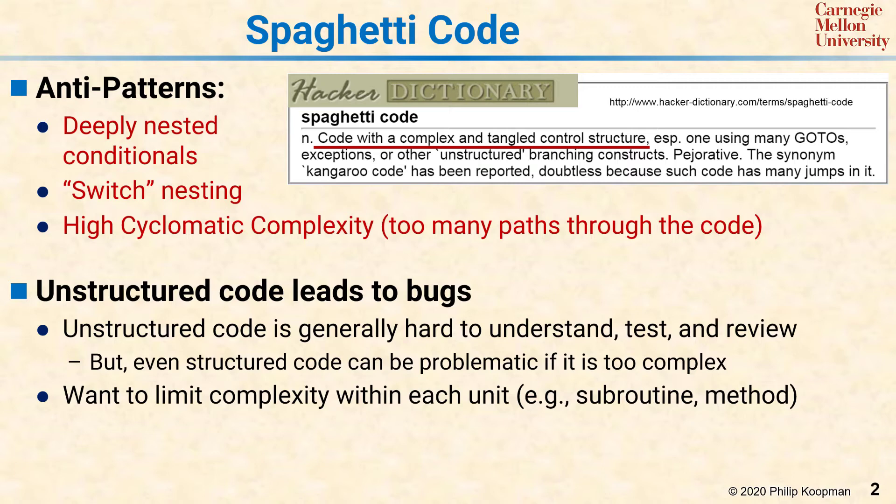At some point, the complexity has to show up somewhere in the software. But the idea is to create moderately simple modules that you can understand in isolation, test in isolation, and then when you're confident of the quality of each module, put them together to create a system. You may have seen a subroutine that is a thousand lines long or more with hundreds of if statements — that's usually spaghetti code. The question is, how complex is too complex, and how do you know when your code changes from good code to spaghetti code?